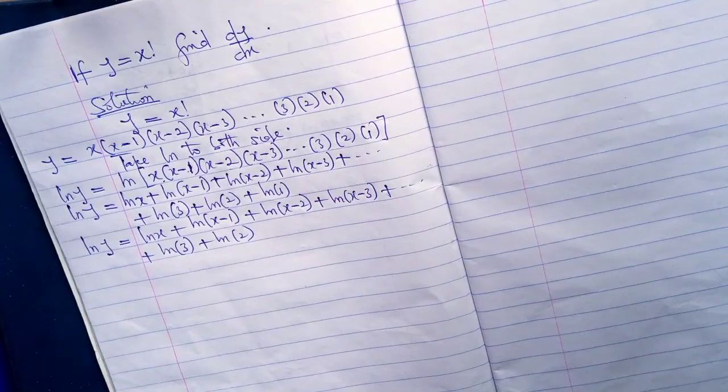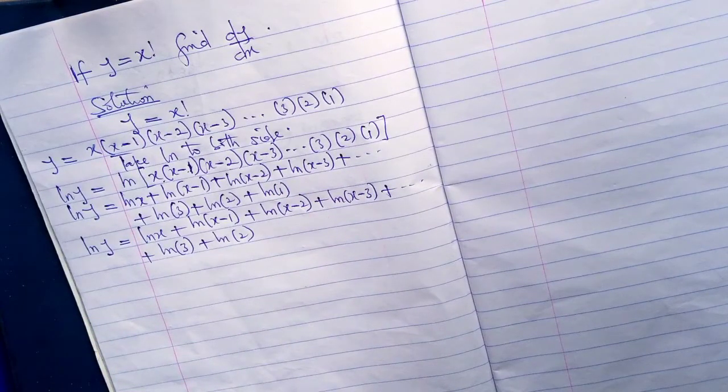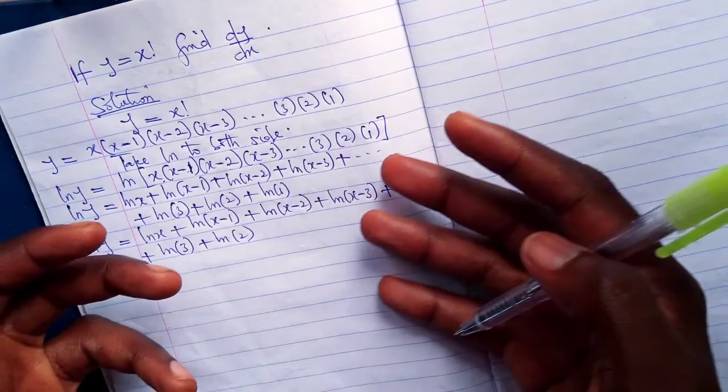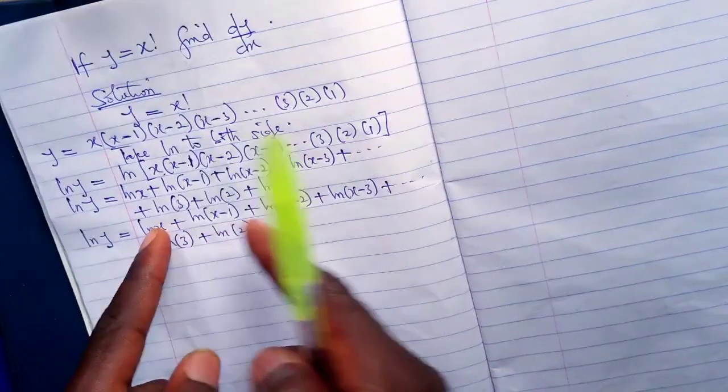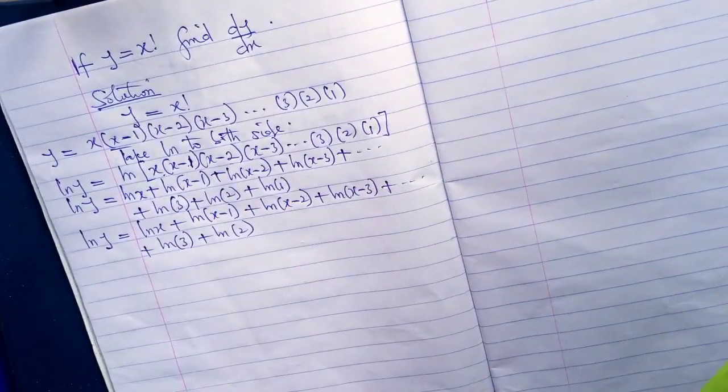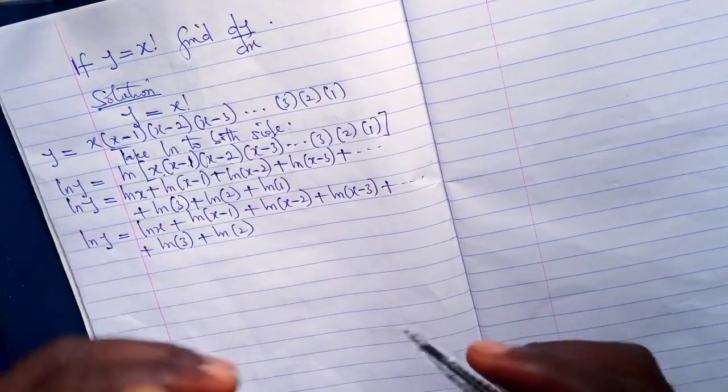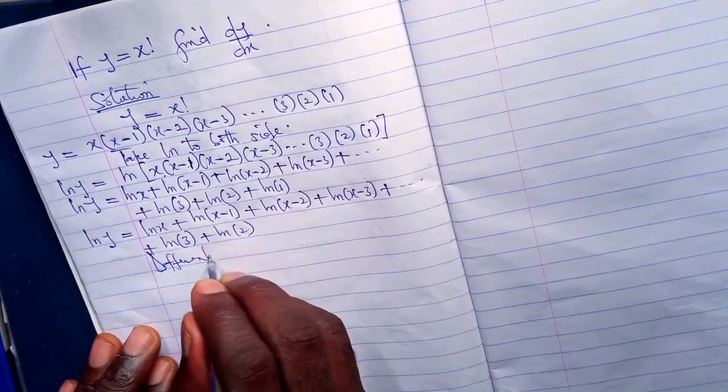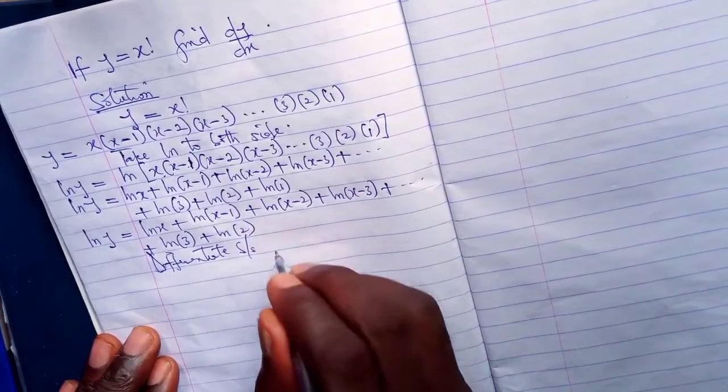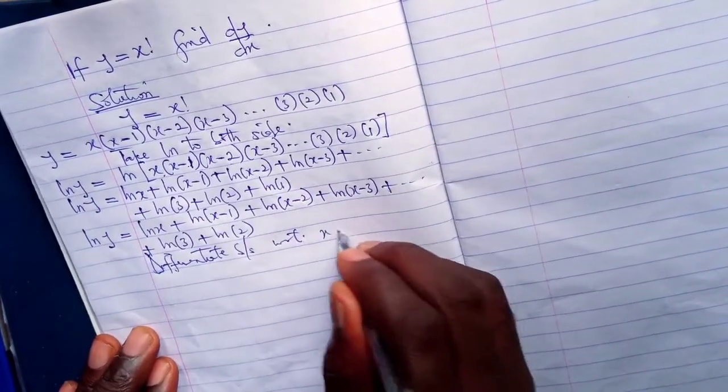Next, we need to continue now by differentiating, because we have separated all the products to form individual logarithms, so we can easily differentiate. Differentiate both sides with respect to x.